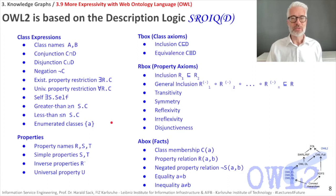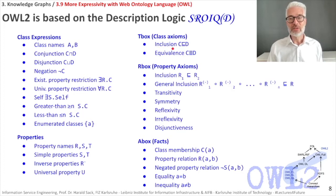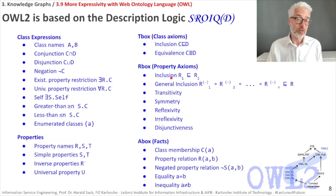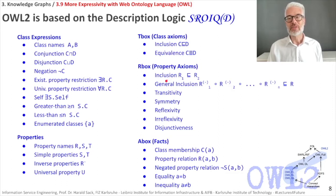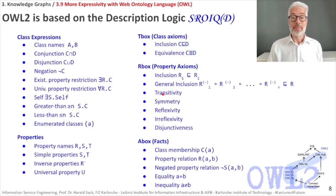For the T-box — terminological knowledge — you have certain axioms. You can define class inclusions, which are subclass relationships as known from RDFS, and you can define two class expressions as equivalent. There is also the R-box for property axioms, sometimes distinct from the T-box. This includes property inclusion — the same as sub-properties in RDFS — and generalized property inclusions or property paths.